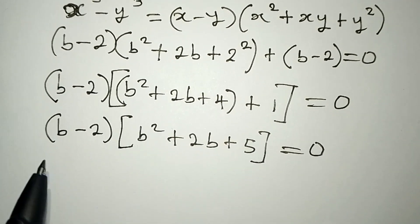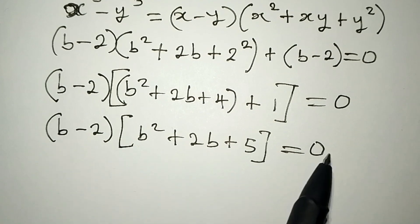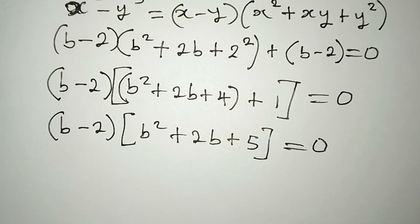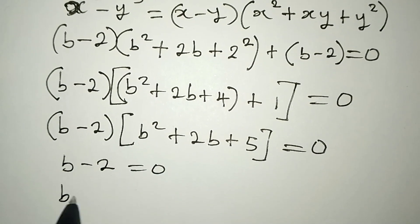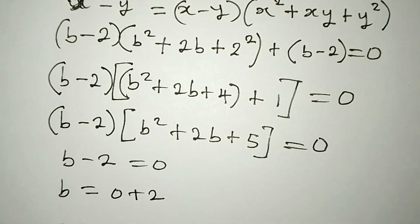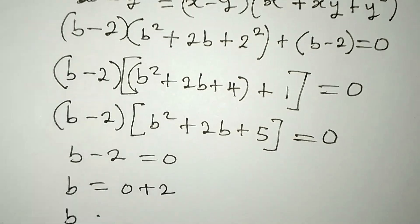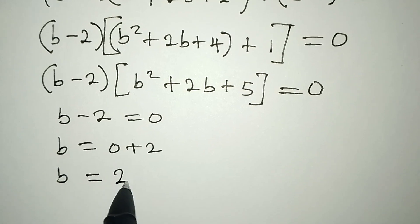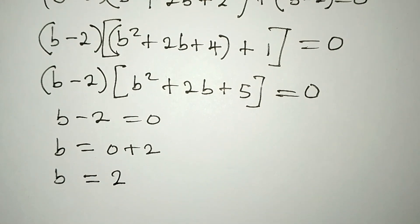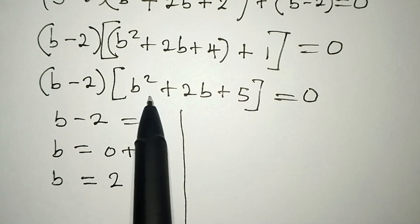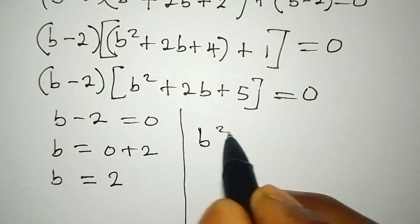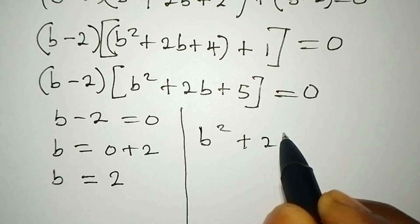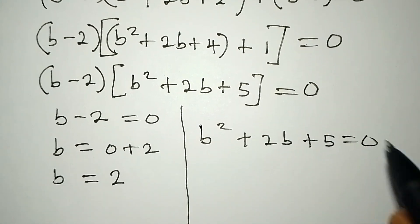Now we know what to do. Either b minus 2 equals 0, or b squared plus 2b plus 5 equals 0. From the first factor: b minus 2 equals 0 means b equals 2. Now for the quadratic: b squared plus 2b plus 5 equals 0.